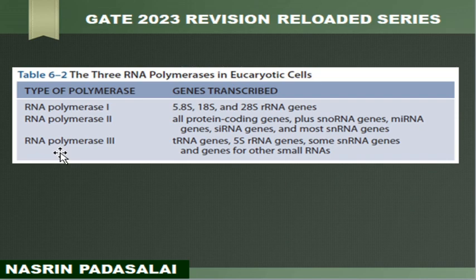To summarize: microRNA, siRNA, snoRNA, and snRNA are all transcribed by RNA pol 2. RNA pol 1 is involved in transcribing ribosomal RNA (rRNA) genes.